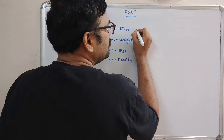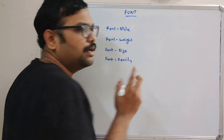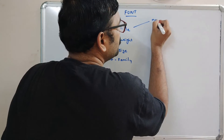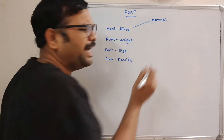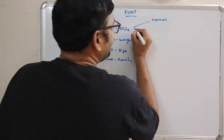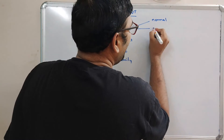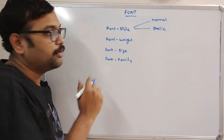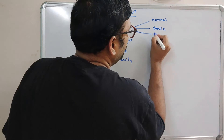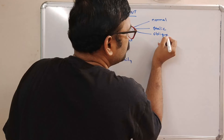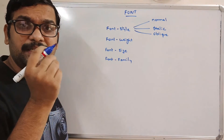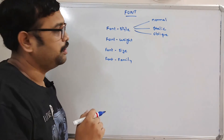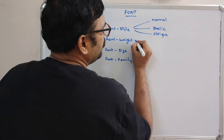Coming to font style, it has three values. The first one is normal — by default it will be normal. The second one is italic, so we can apply the italic style for the font. The third one is oblique, which is similar to italic with a little bit of difference but almost the same.